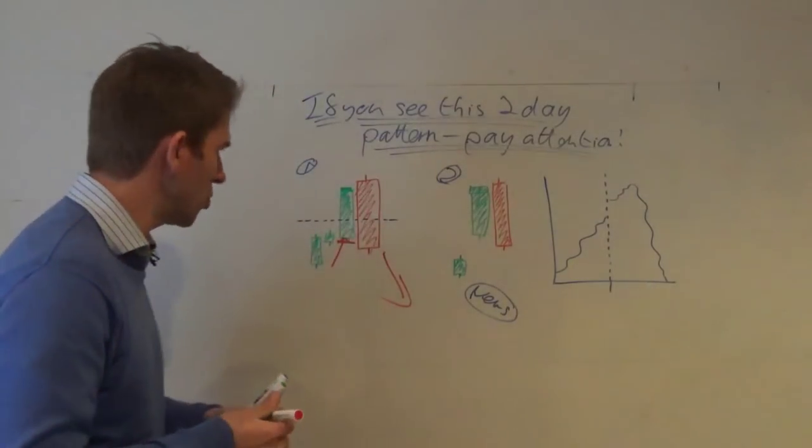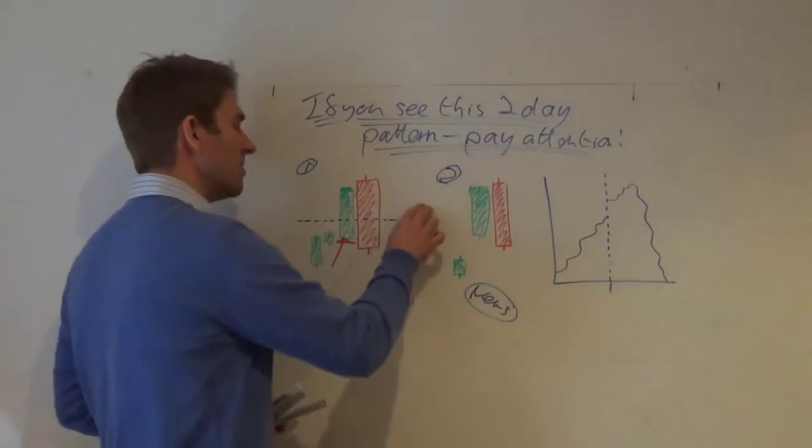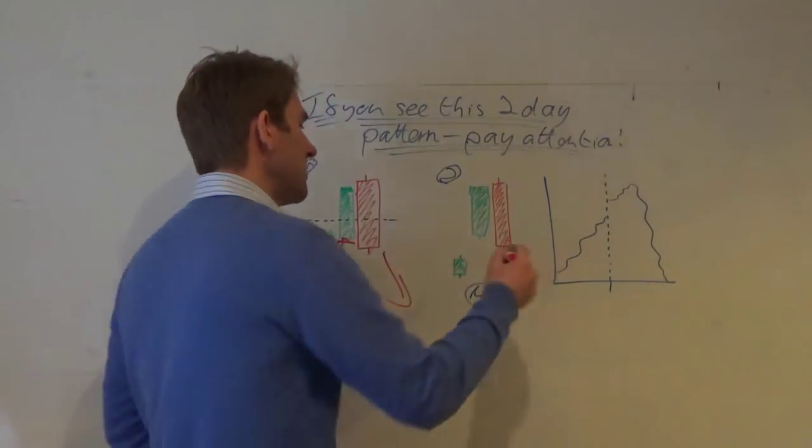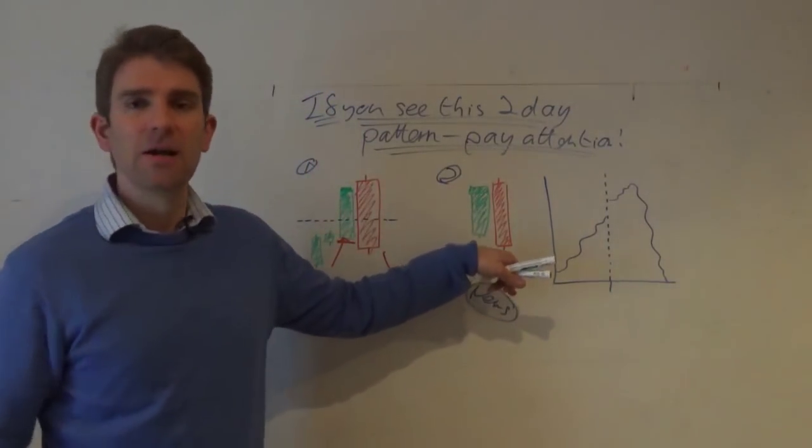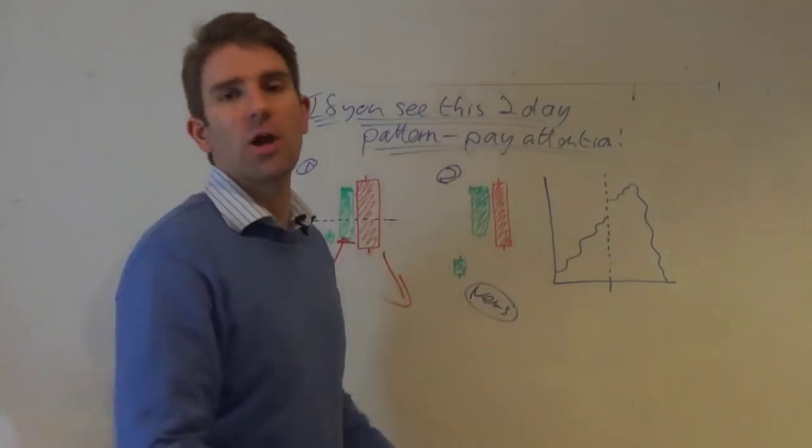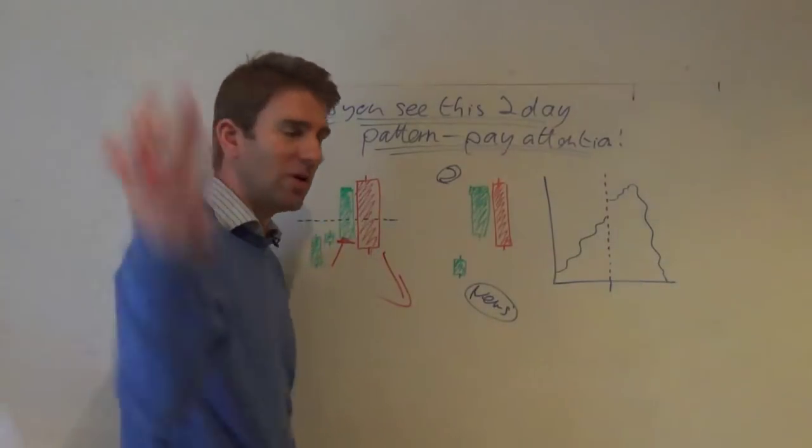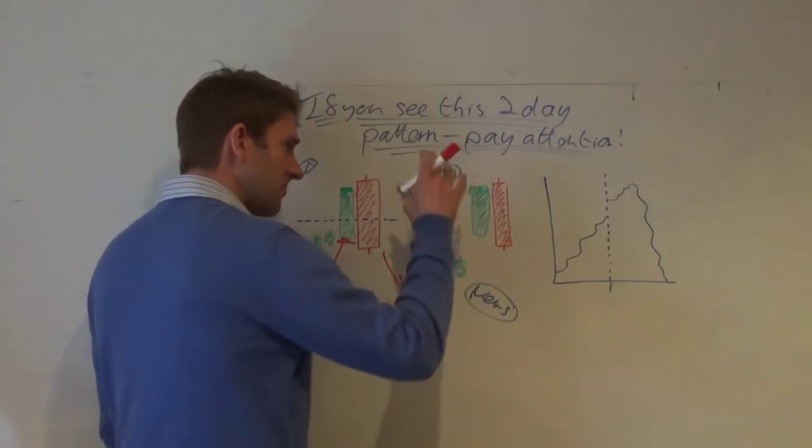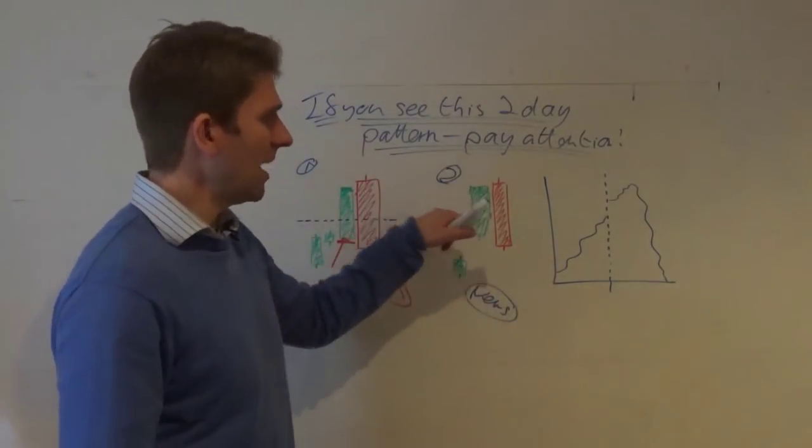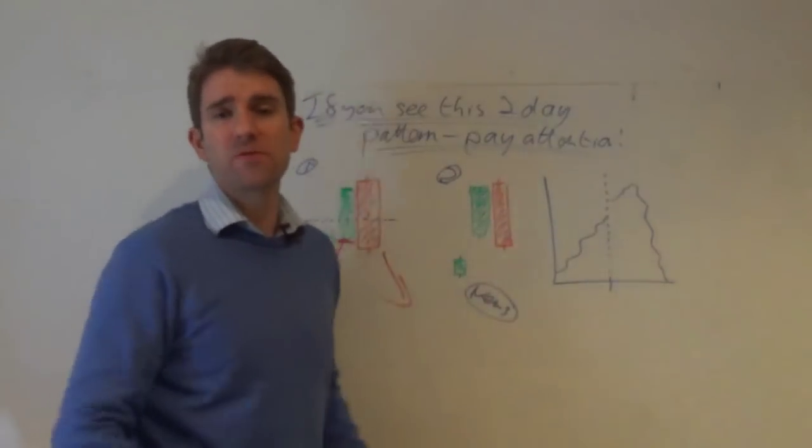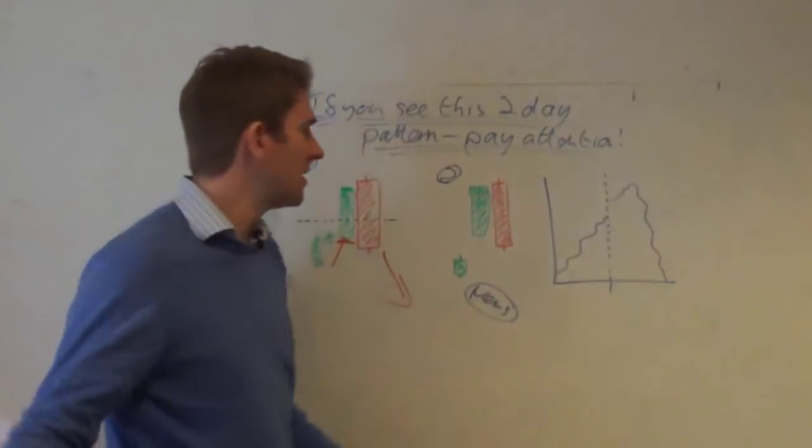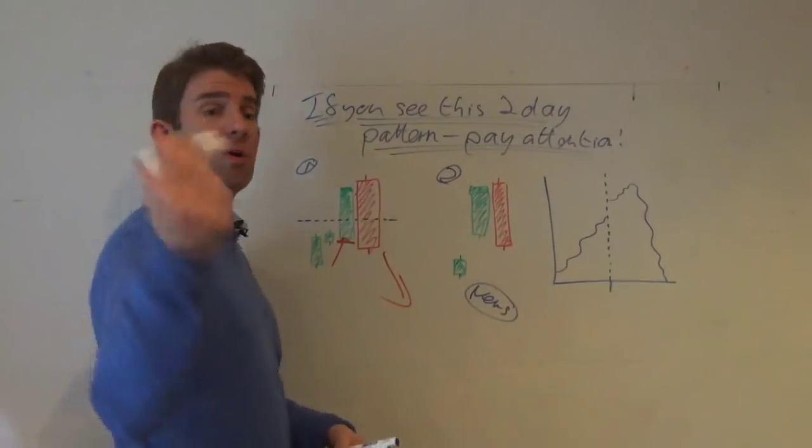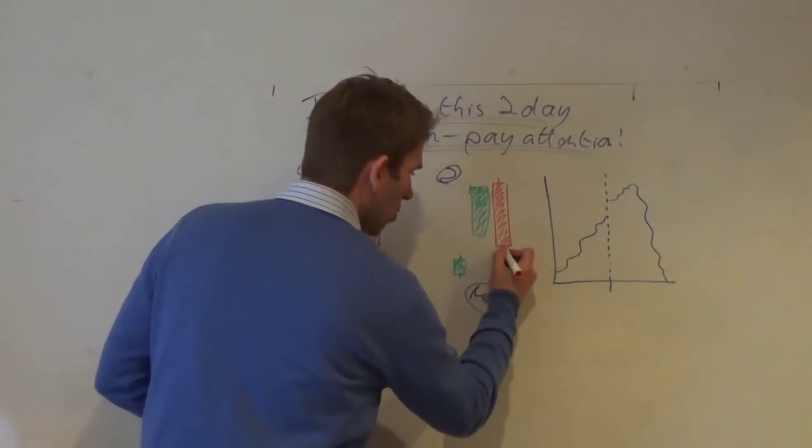Same with point two: we've gapped up on news, maybe it's earnings, maybe it's something bullish on the market - who cares, who knows, we're traders, we're not economists. The thing gaps up, it moves up, closes at highs, good volume, everyone's happy. News articles perhaps around it, all this bullish mania. The next day we take out the high, but no - we reverse and we come down and we close at the lows.